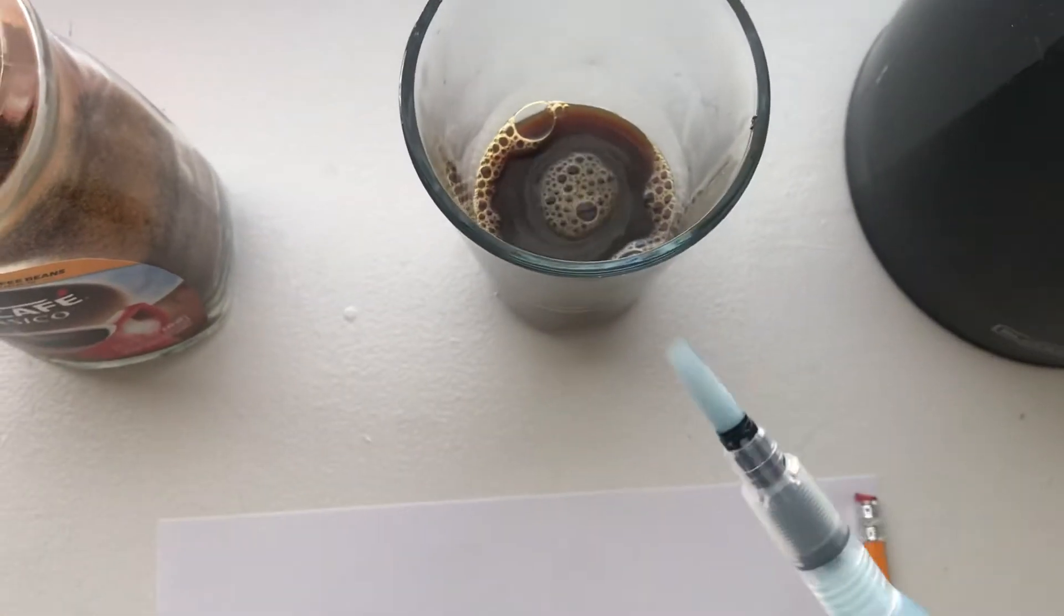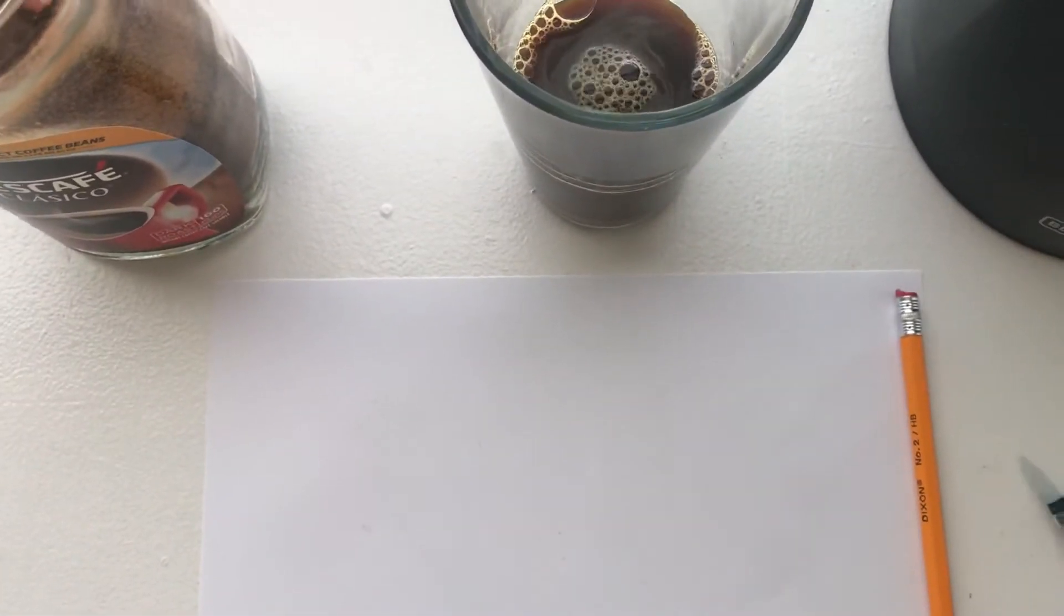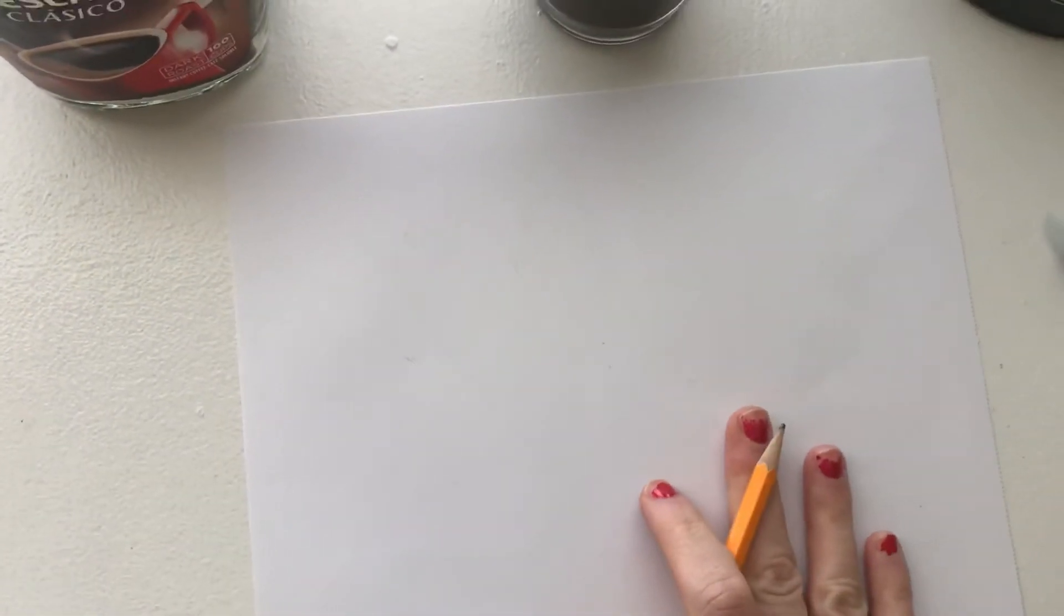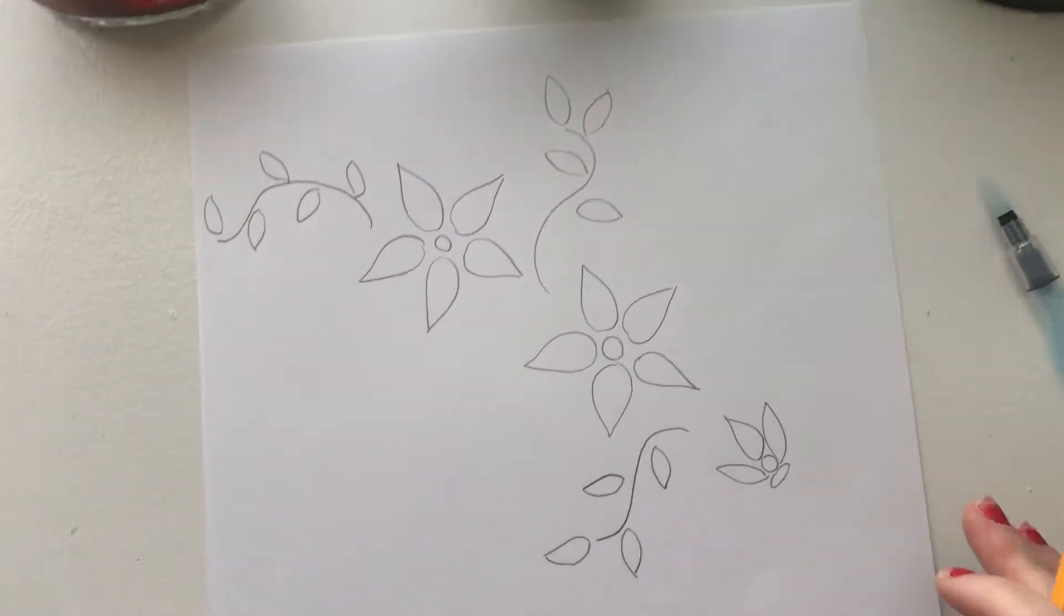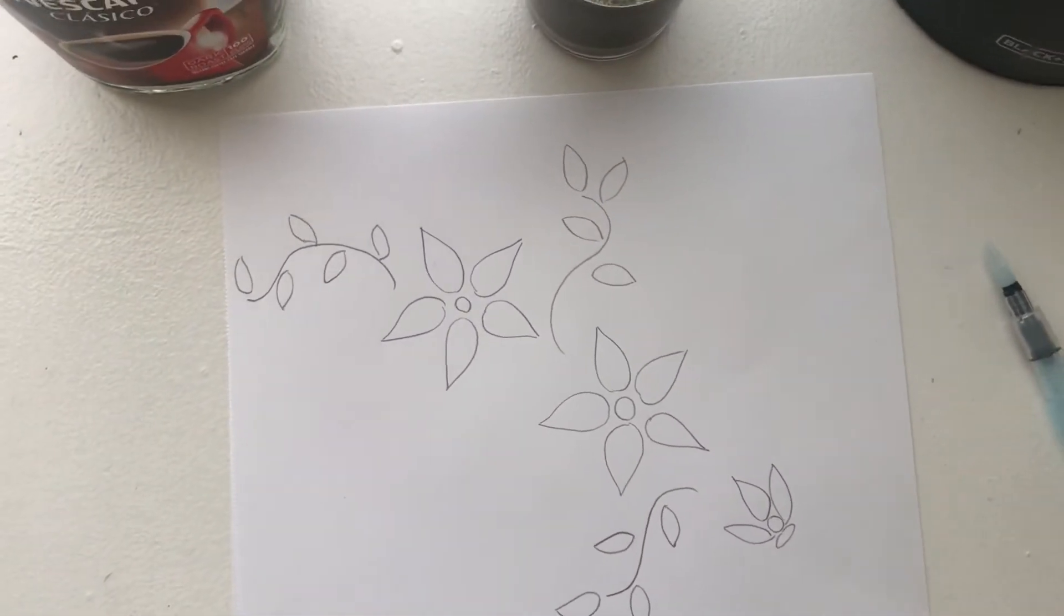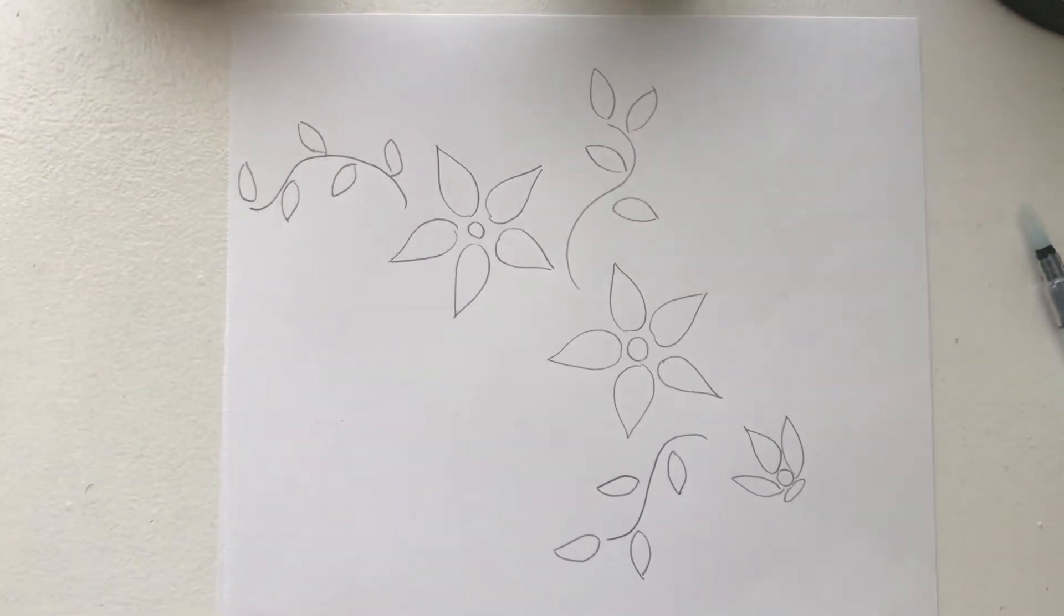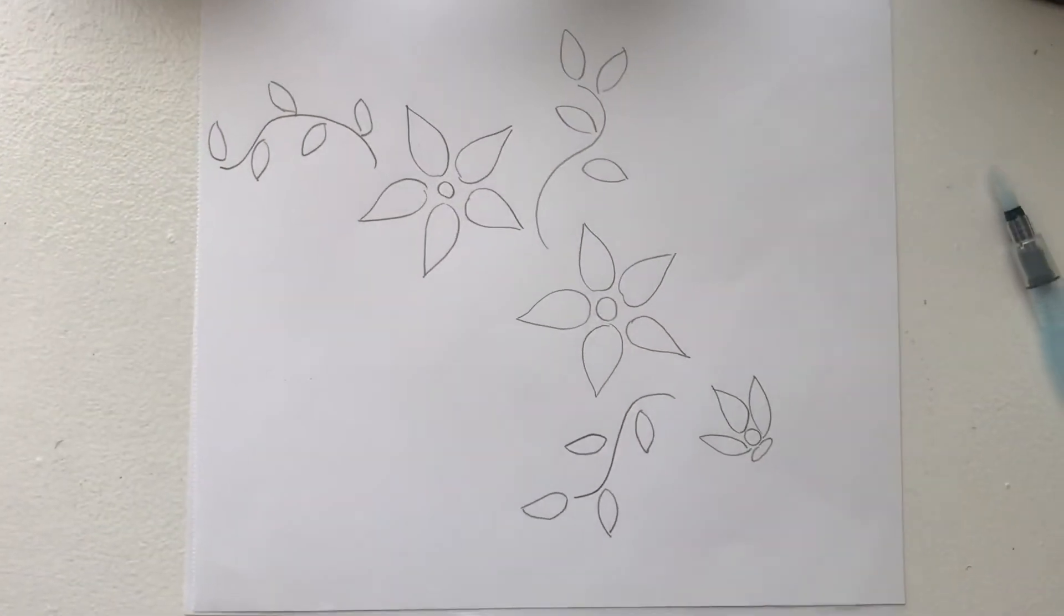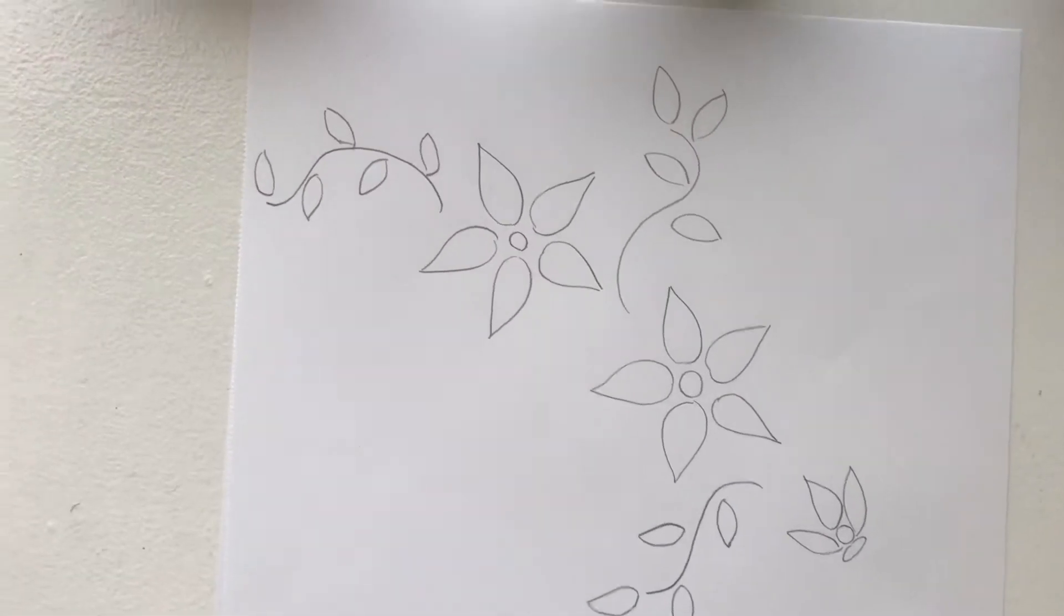So then you take your paintbrush and your paper and first you want to draw a picture on your paper and I pre drew a picture already. I just drew some flowers, just the flowers, some leaves. You can draw shapes, you can draw whatever you want to draw, any kind of creation and then you can paint with it.